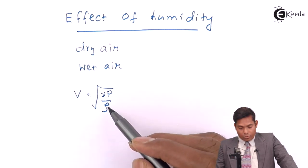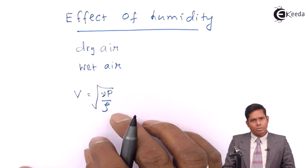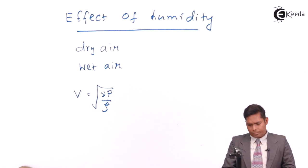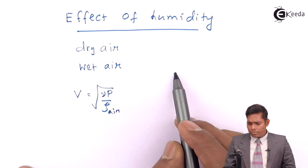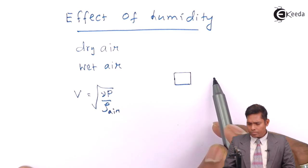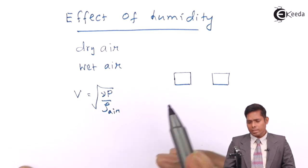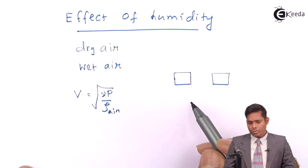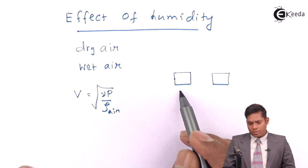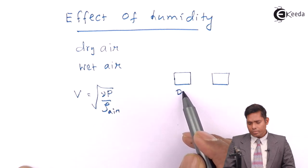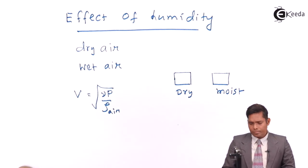Now if we think of the density of air, in a given volume I consider two situations, one sample here and another sample. This is the case when this is dry air and this is moist air.